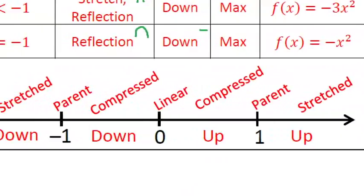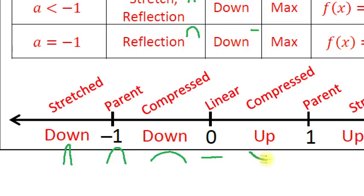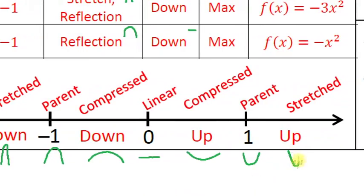To wrap up: if a is very negative, the graph is stretched and faces down. At -1, it's the normal parent shape but facing down. Between -1 and 0, it's compressed and facing down. At 0, it's linear. Between 0 and 1, it's compressed and faces up. At 1, it's the parent graph facing up. Greater than 1, it's stretched and facing up. You can see what happens as the a value goes from very negative all the way through zero to very positive.